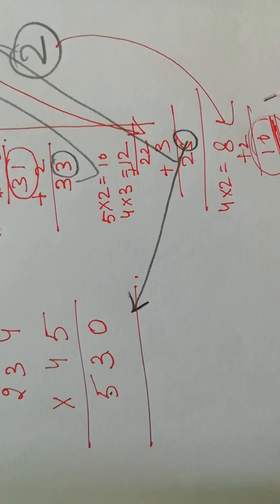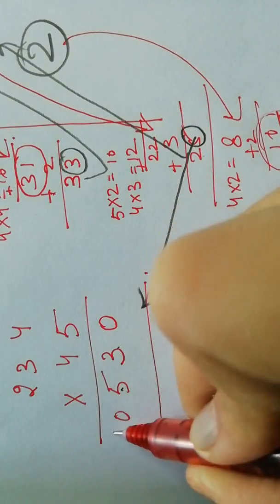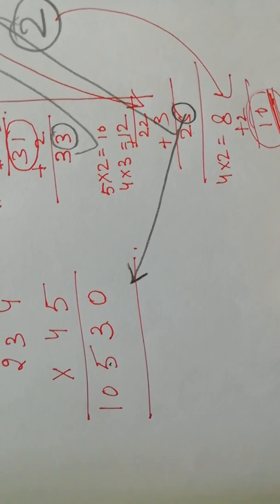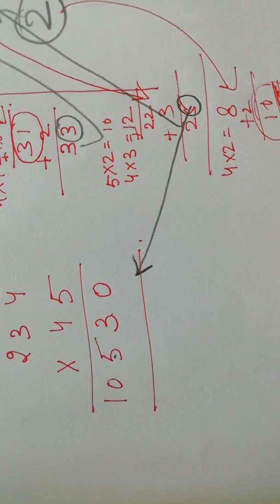Now this entire number will be written as it is here: 1, 0, 5, 3, 0. So the product of 234 and 45 is 10,530.